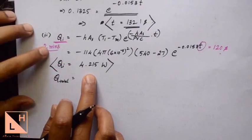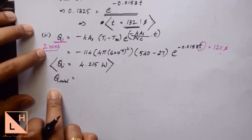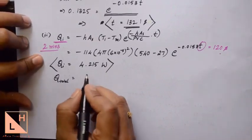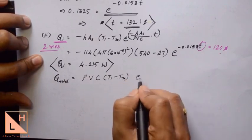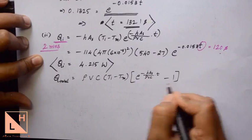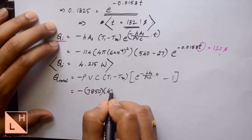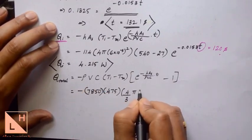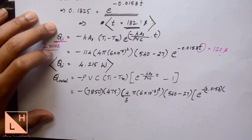This 4.215 watts is the amount of heat flowing at 2 minutes. We will also find the total heat that flowed throughout the full 2-minute duration.